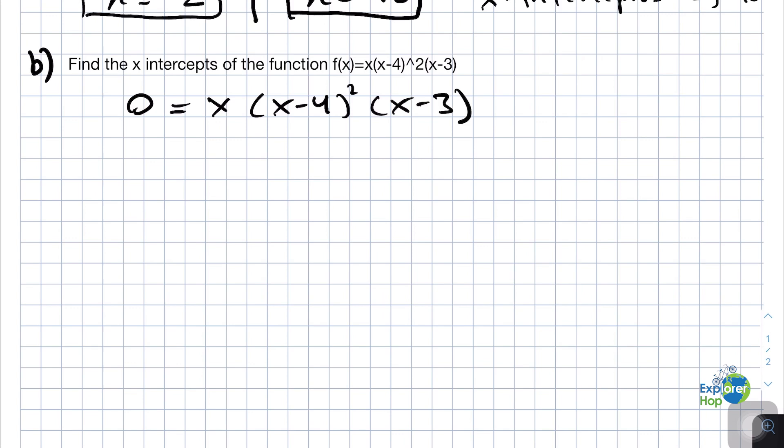To solve this, we can use the zero product property, which is that whenever we have different terms being multiplied with each other, we can just solve them separately and put them equal to 0.